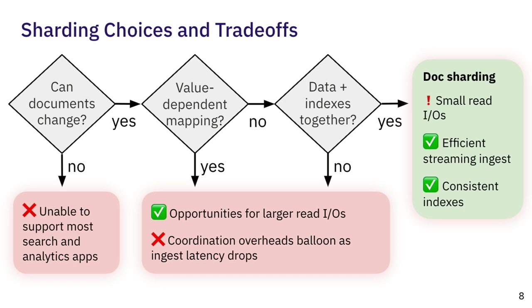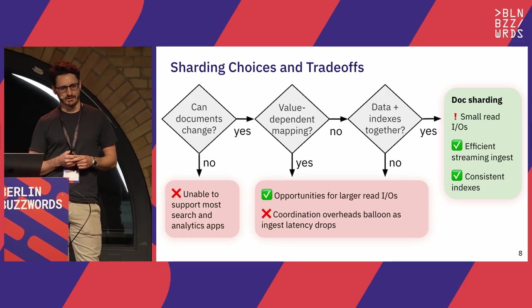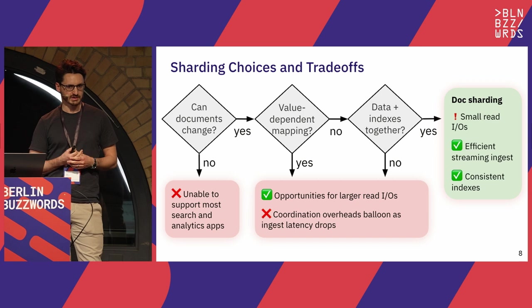Some systems say it's easier to build with immutable documents that can never change, but that makes it much harder for users if documents do change in the real world. In our case, we decided most use cases do not support immutable documents — so in our system, documents are fully mutable. They can change in whatever way you want. So we have to choose the shard a particular document lives on, and we can choose based on the value of a field — sometimes called the clustering key, sharding key, partitioning key, or distribution key.